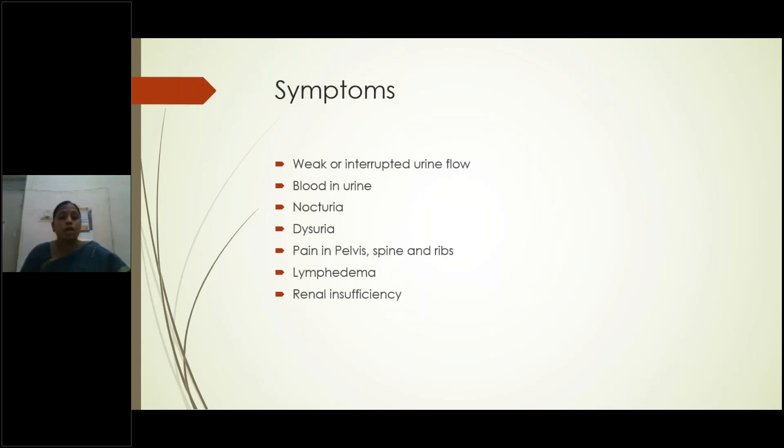Clinical presentation includes urinary symptoms such as interrupted urine flow due to prostatic urethral obstruction, hematuria, nocturia, and dysuria. Due to metastasis to bones, patients experience pain in the pelvis, spine, and ribs. Other symptoms include lymphedema and renal insufficiency.